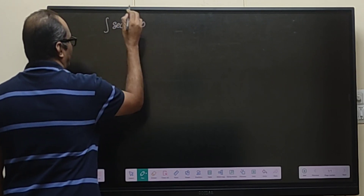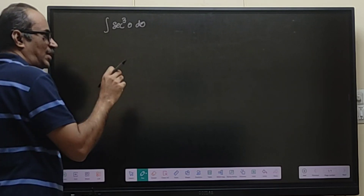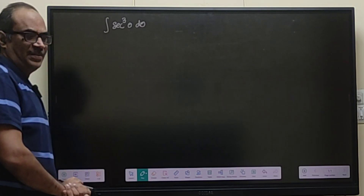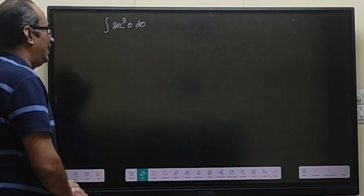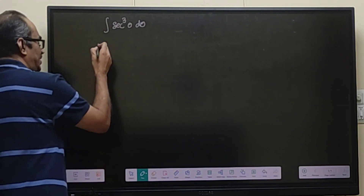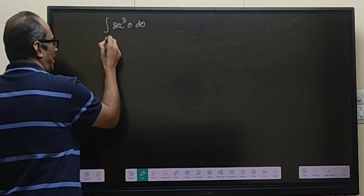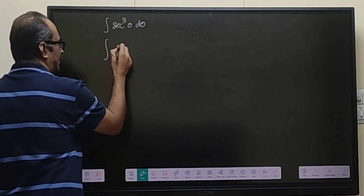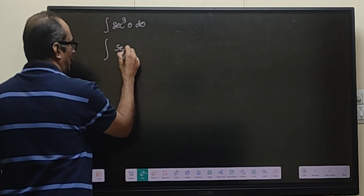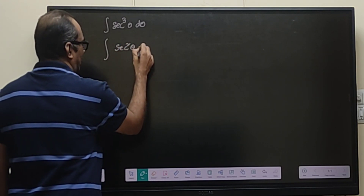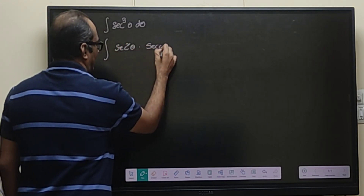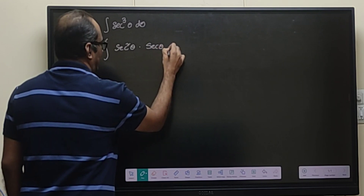When we want to solve this particular problem, we will be using the concept of integration by parts. That means we will write this integral as a product of two functions: secant square theta into secant theta, d theta.